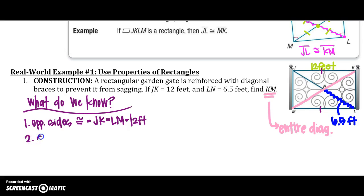I also know that the diagonals bisect each other because that is the property of a parallelogram. So I know that LN equals, so LN is bisected, so it equals JN, so those both equal 6.5 feet.